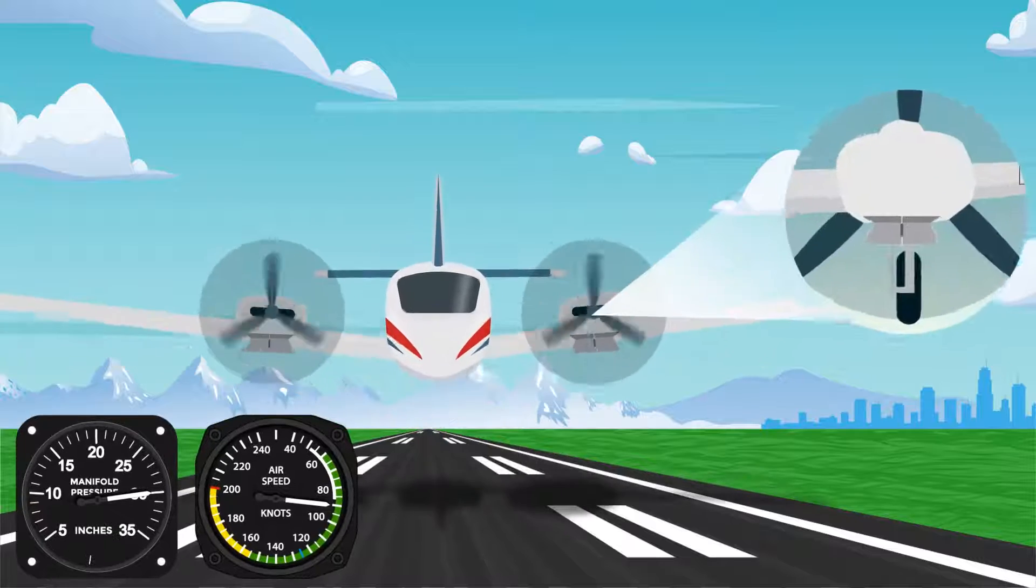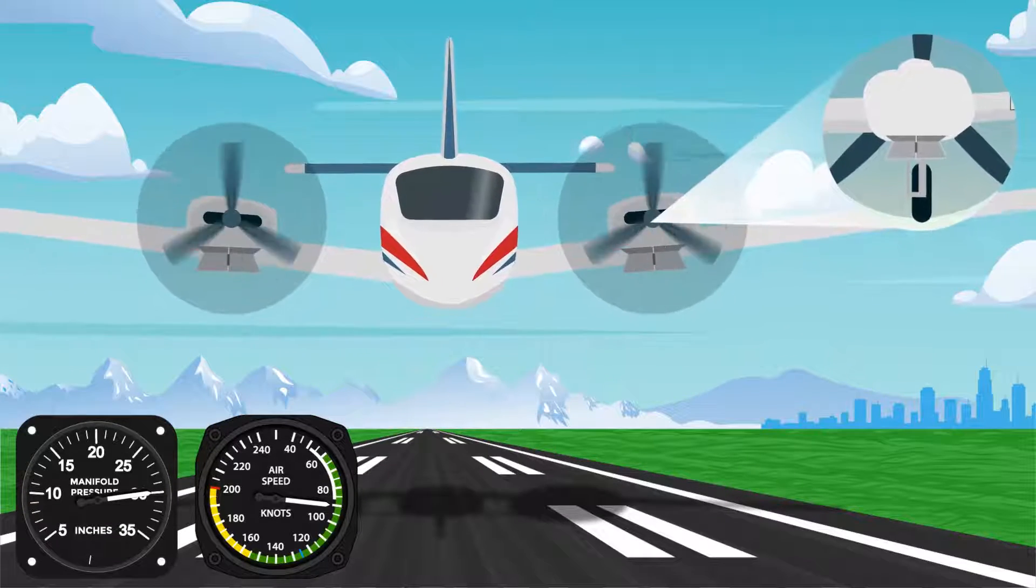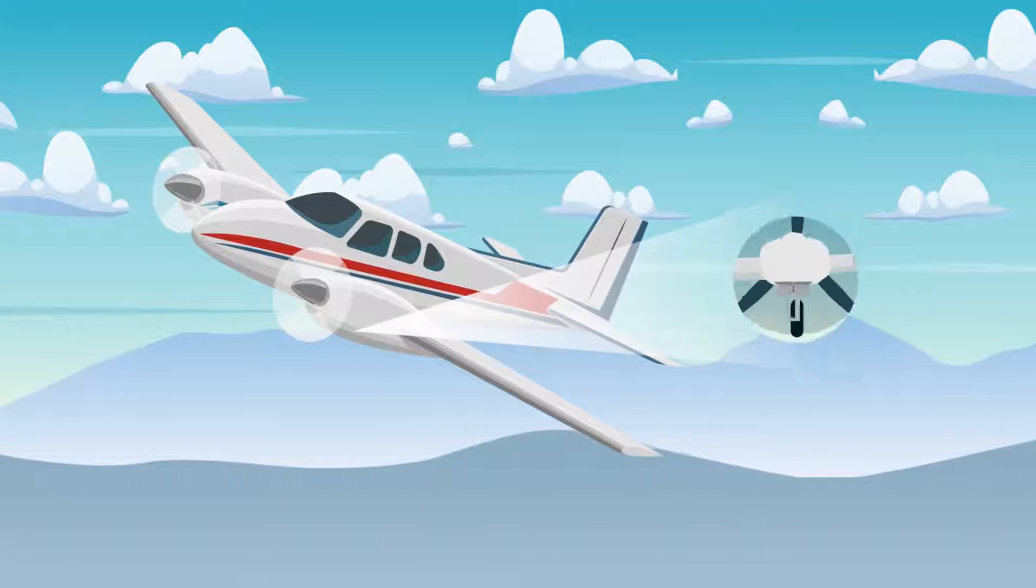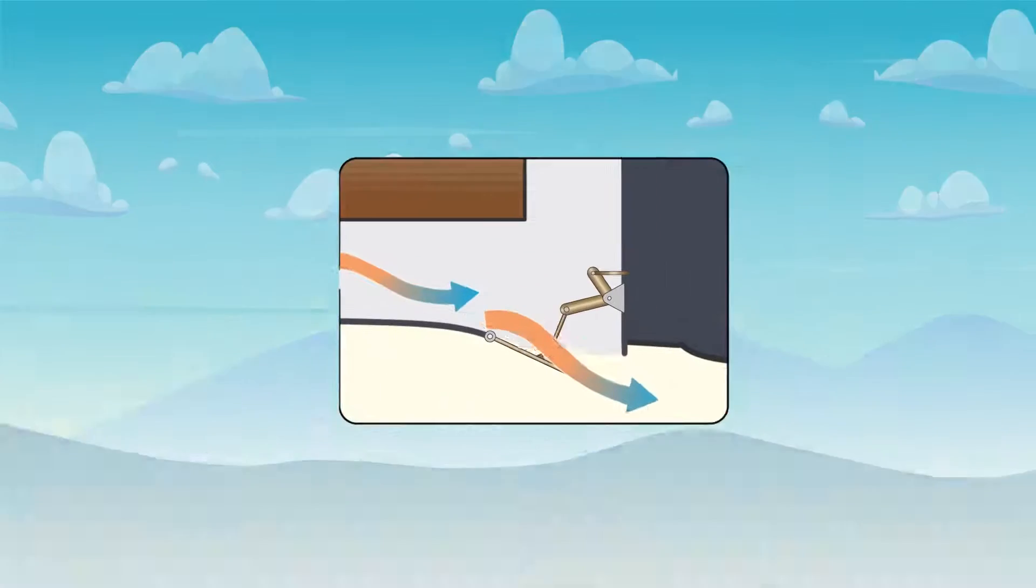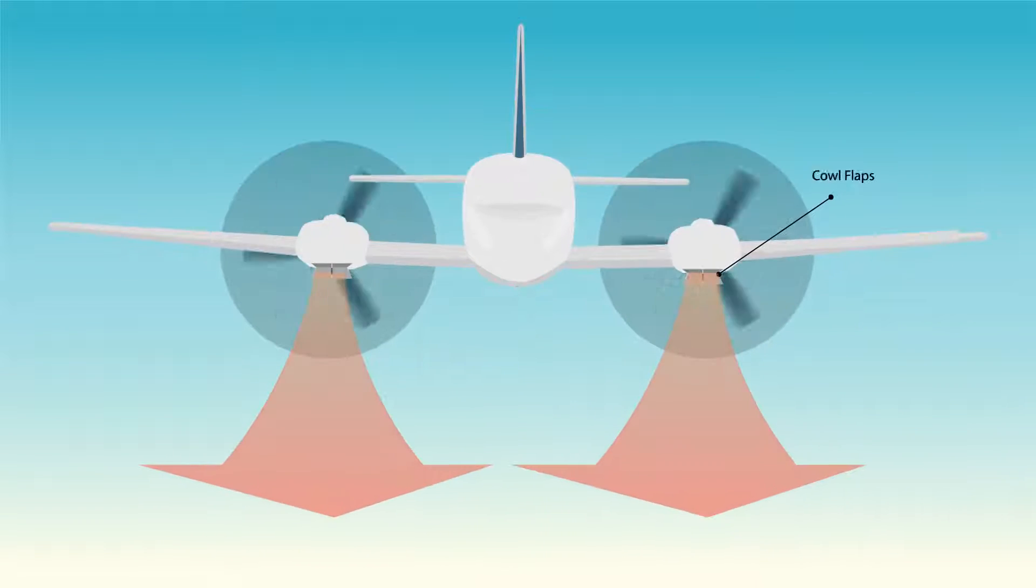Cowl flaps are used in high-power, low airspeed settings, such as on takeoff and climb. Having the cowl flaps opened or closed affects the performance of the aircraft as well. Having the cowl flaps open would cause more drag than having it closed.